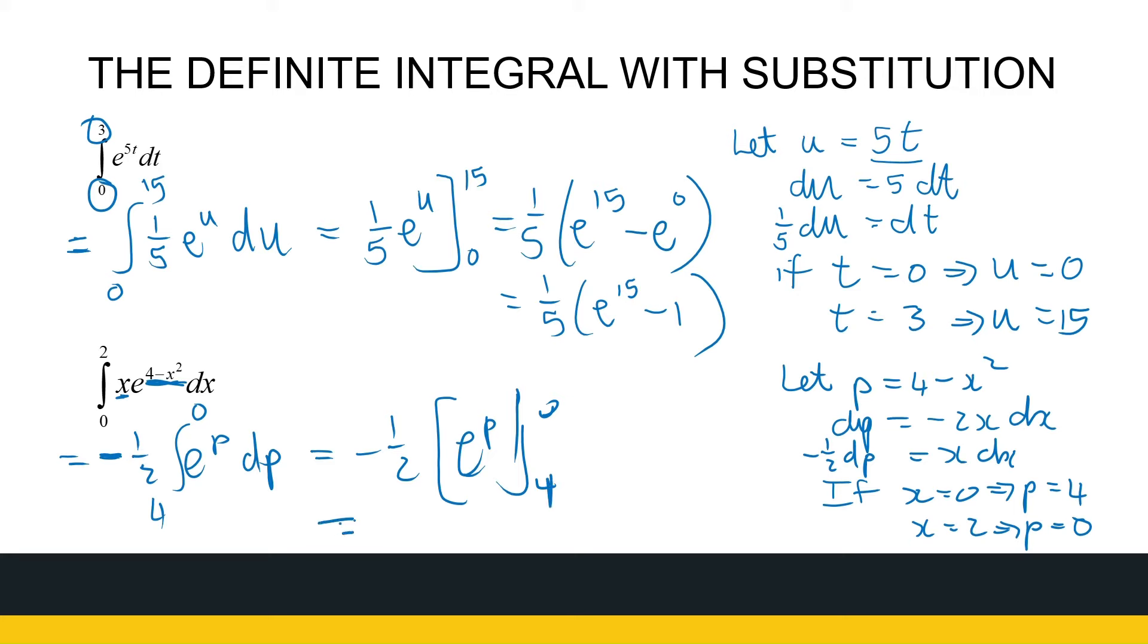So that's minus a half times e to the power p between 0 and 4. So that is minus a half times e to the power 0 minus e to the power 4, and e to the power 0 is just 1. So it's minus a half times 1 minus e to the power 4. Now, whatever you do, do not take your calculator and calculate e to the 15 or e to the power 4 and give me ugly decimal numbers because this is the exact answer. Rather stick to the e to the power unless you need to use that number for further calculations.